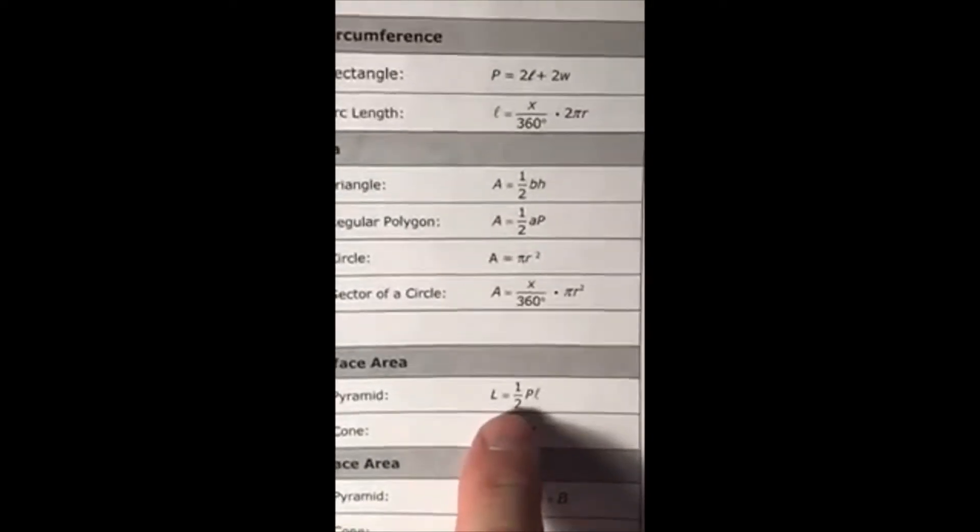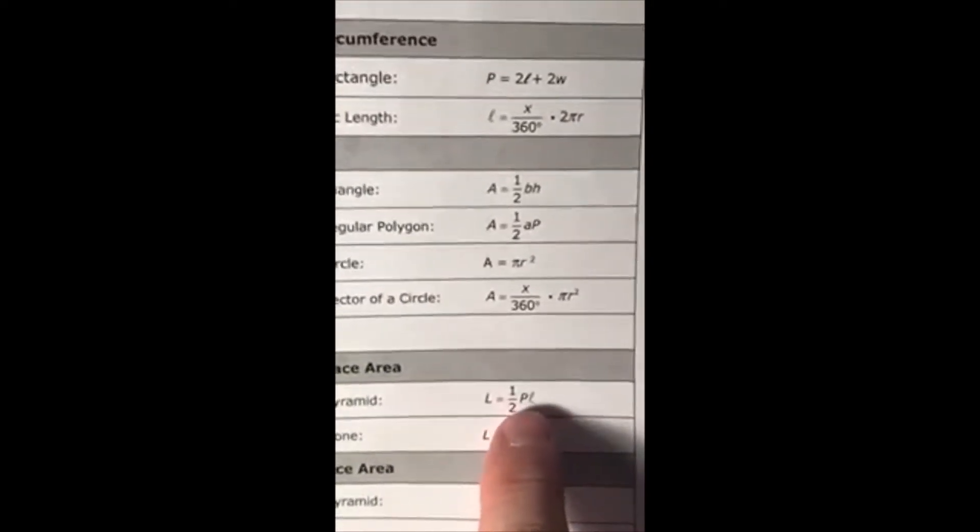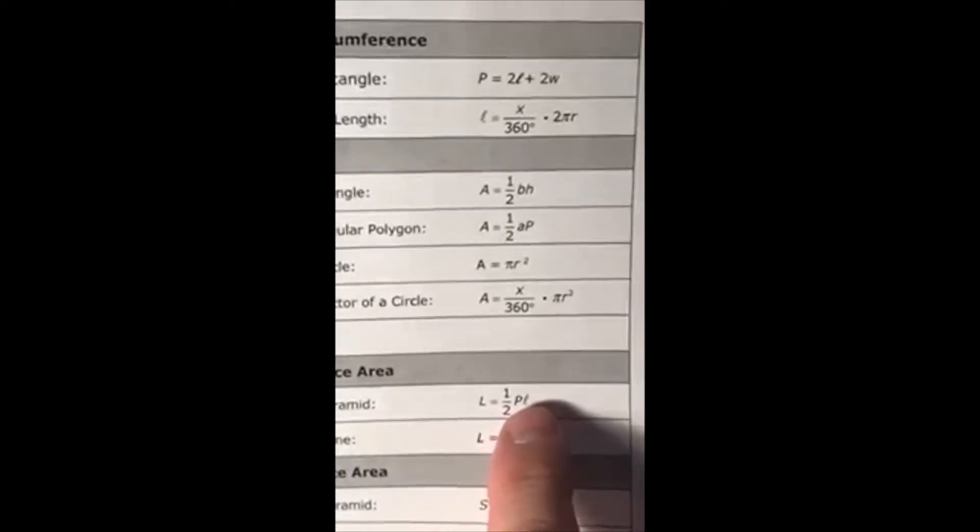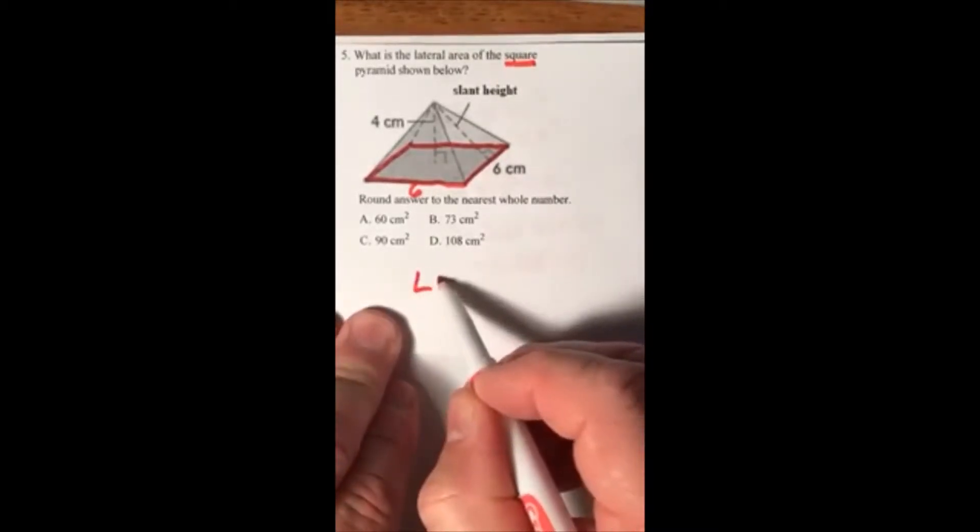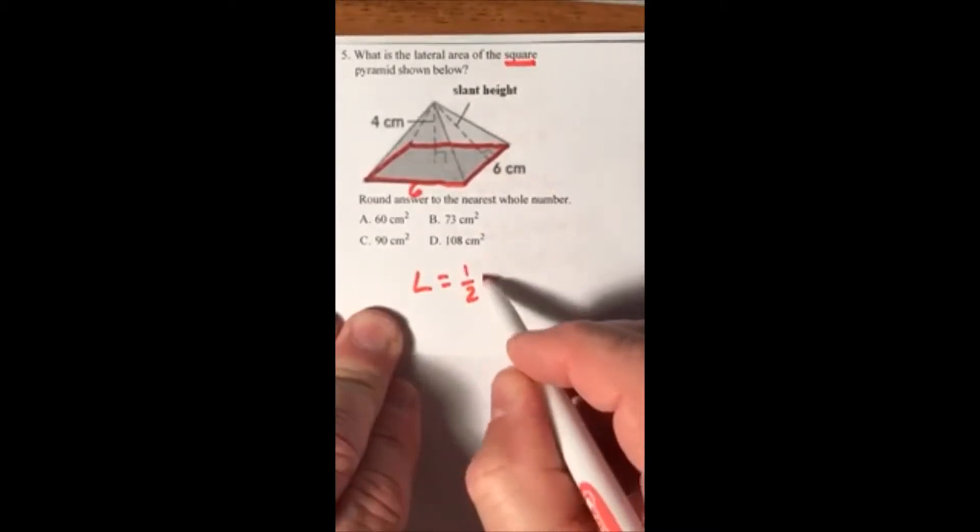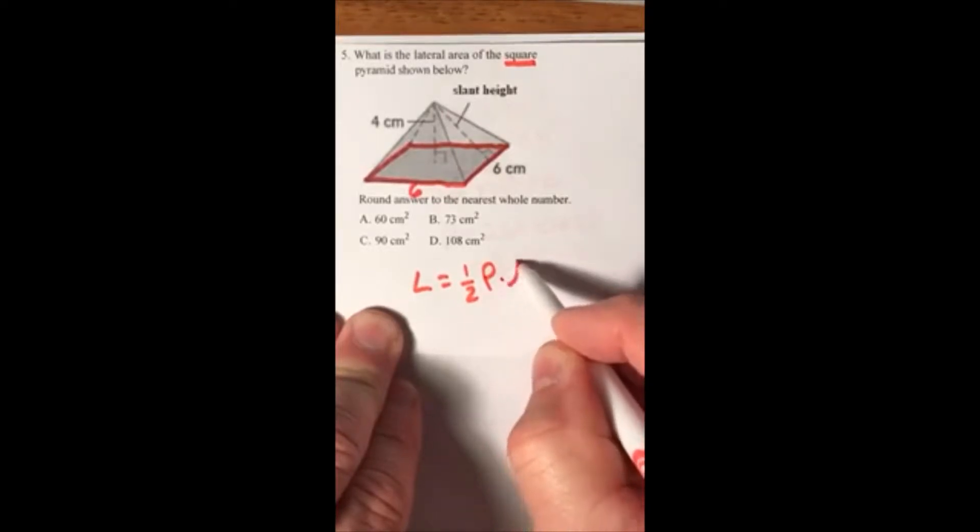The next thing you want to do is go to the formula chart and look up lateral area for a pyramid, which is one half times p (perimeter) times l (slant height). The lateral area of a pyramid is L equals one half perimeter times slant height.